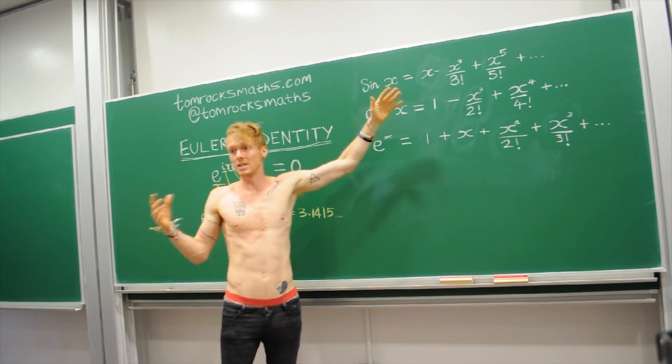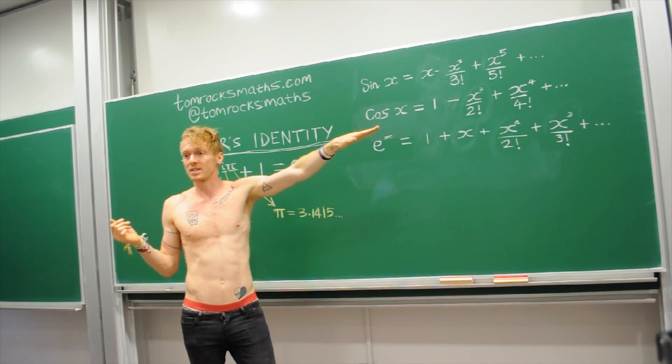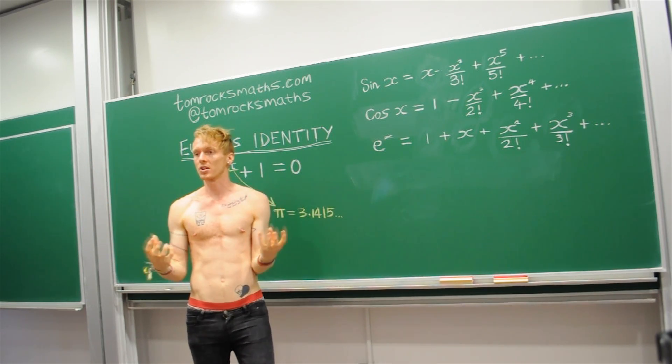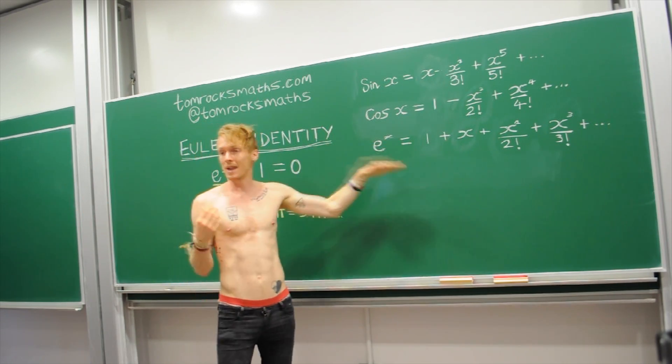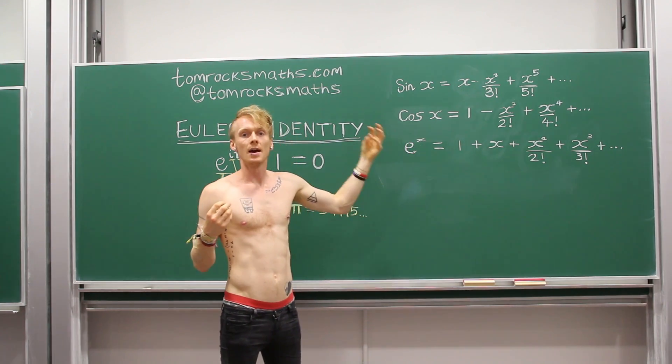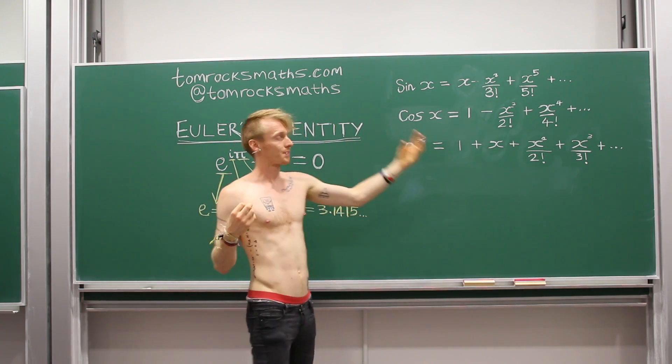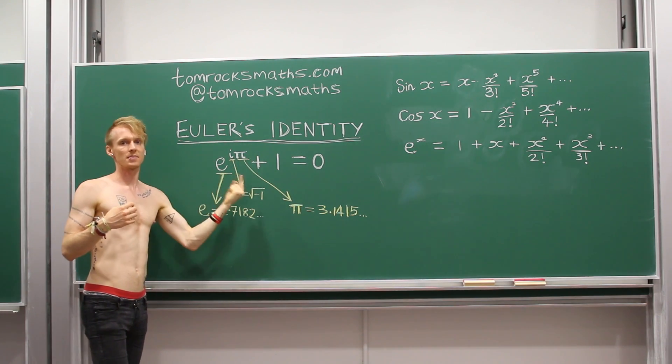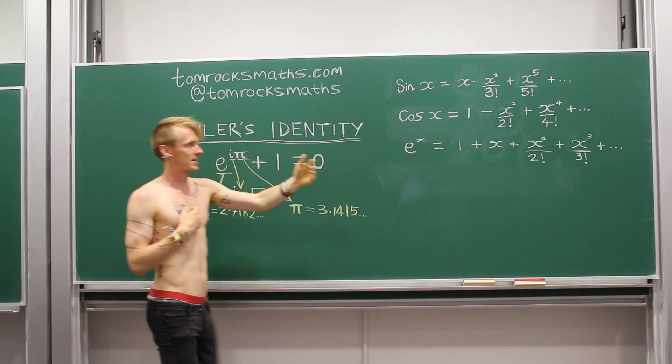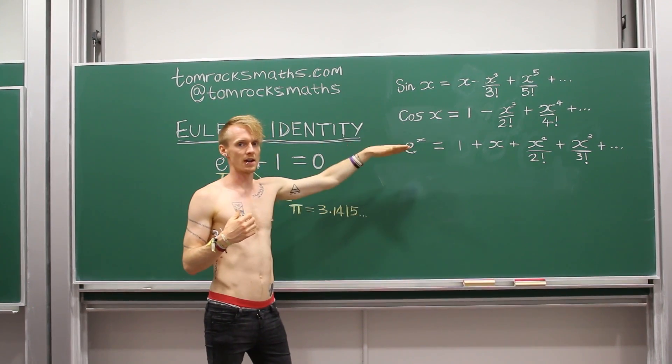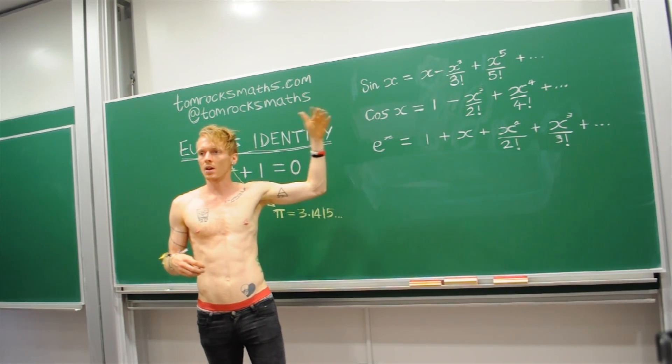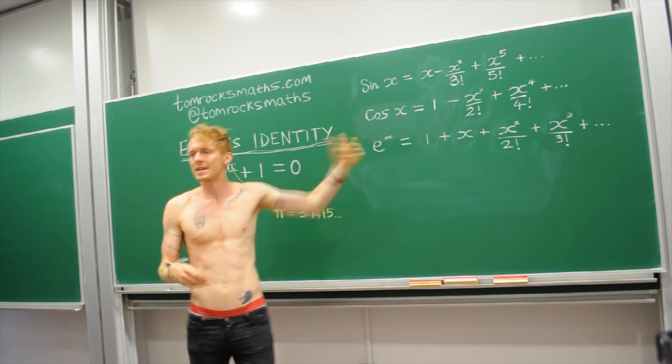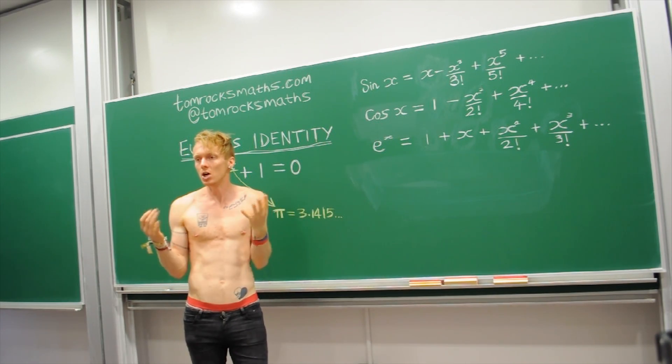This is what sine looks like, that's all you need to know. This is what cosine can be written like, again it's fine, it's just how we define the mathematical function. And this is the exponential function. And the reason I've written the exponential function is if we look back at Euler's equation, we have e to the power of something here, and this is what's going on over here.